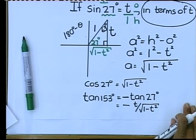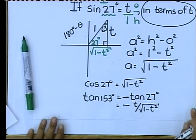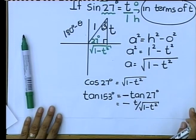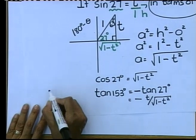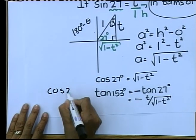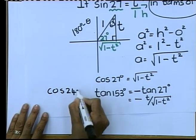All right, everybody, I'm just going to do one last question, which is the cos of 243. The cos of 243, and then I think we're going to have to end off. Let's do it together. I have cos 243.